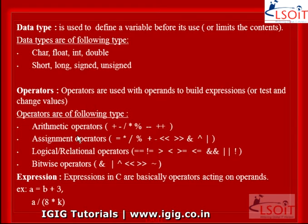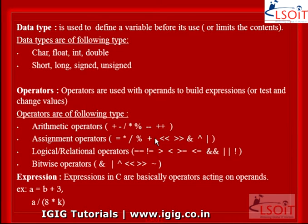Assignment operators are as follows. Simple assignment operator — the equal sign you see on screen — assigns the value from the right operand to the left operand. Others include: multiply and assignment, division and assignment, modulus and assignment, add and assignment, and subtract and assignment operators.